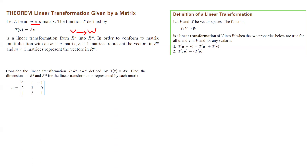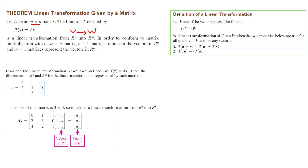Consider the following linear transformation from Rⁿ to Rᵐ, from N-space to M-space. This linear transformation takes vector v and multiplies it by matrix A. We have a 3 by 3 matrix A. A times v is a 3 by 3 matrix multiplied by a vector in the space, which gives another vector in the same space. So n = 3 and m = 3.